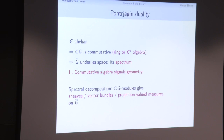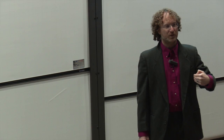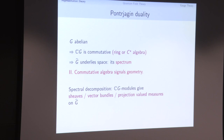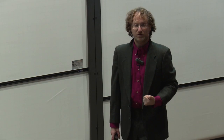Whenever we have a representation of G, we get an algebraic structure — we have a module for this group algebra. When the group is abelian, this algebra of all operators generated by G is a big, nice commutative algebra. Our second theme was: when you see a commutative algebra, there's geometry. So we find a space — the unitary dual, not just as a set but as a topological space, a geometric object which is its spectrum. Modules over this algebra then give sheaves, vector bundles, or projection-valued measures on the dual, and that is the sense of spectral decomposition.